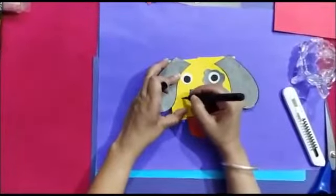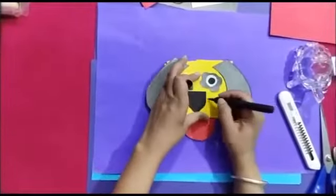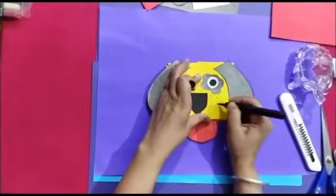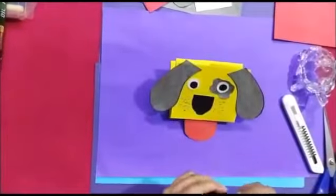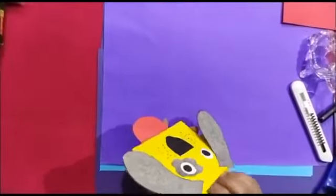Take black sketch and put dots. Now ready, now we have our dog puppet ready.